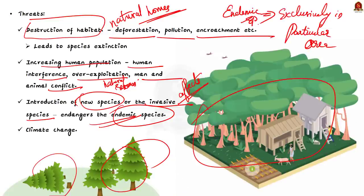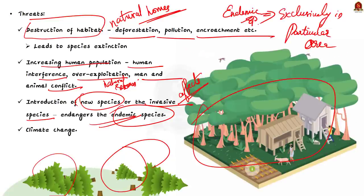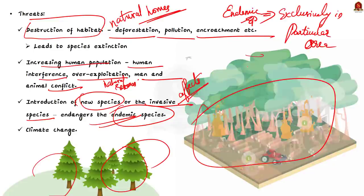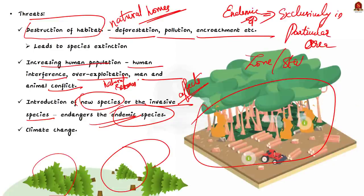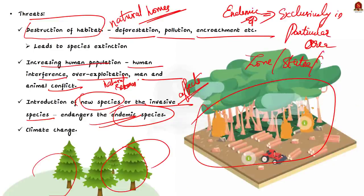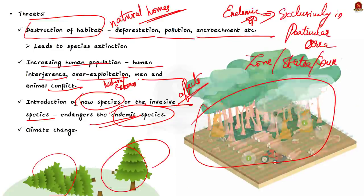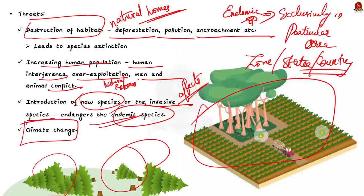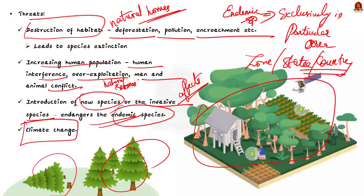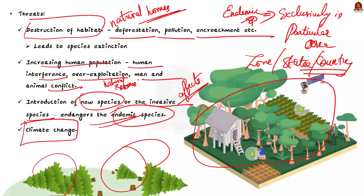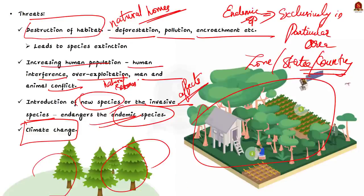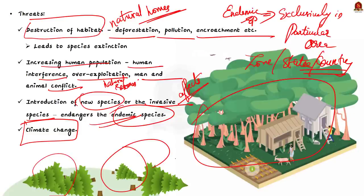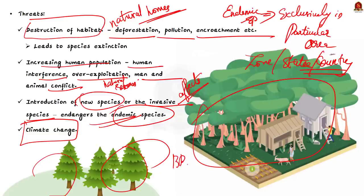Endemic species are those plants and animals found exclusively in a particular area and not naturally found anywhere else. This endemicity could exist at the levels of zones, states, or country. In addition to all these threats, we have climate change. All these factors affect environmentally significant areas — this is where biosphere reserves come into picture.